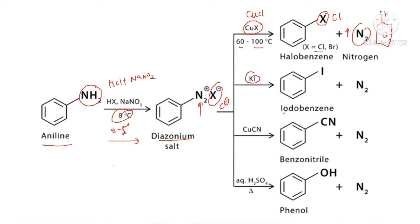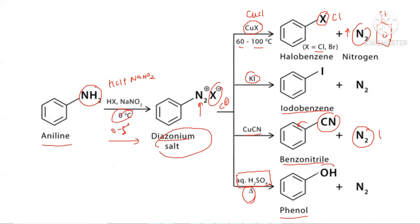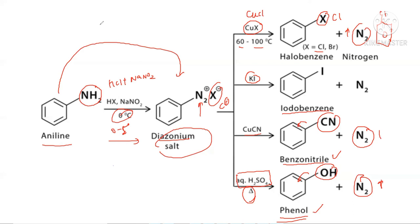If I want iodobenzene, I add KI after the diazonium salt is prepared, and I get iodobenzene. If I add CuCN after the diazonium salt is prepared in situ, I get benzonitrile — CN attached to the benzene ring — and nitrogen gas evolves. To prepare phenol, the diazonium salt is reacted with aqueous H₂SO₄ and heat, giving a product where OH is attached to the aryl ring — that is phenol — along with evolution of nitrogen gas. So aniline can be converted into halobenzene, phenol, and benzonitrile through the diazonium salt.